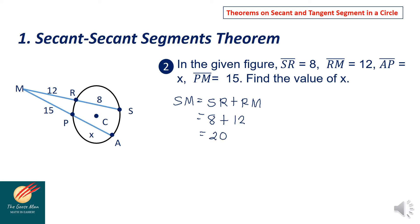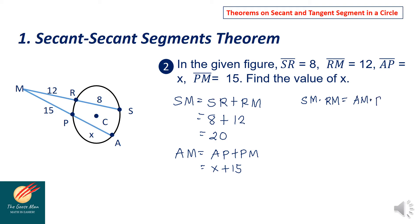In the same manner, AM equals AP plus PM, where AP equals X and PM equals 15. From this, we apply the theorem: SM times RM equals AM times PM. So 20 times 12 equals (X plus 15) times 15.